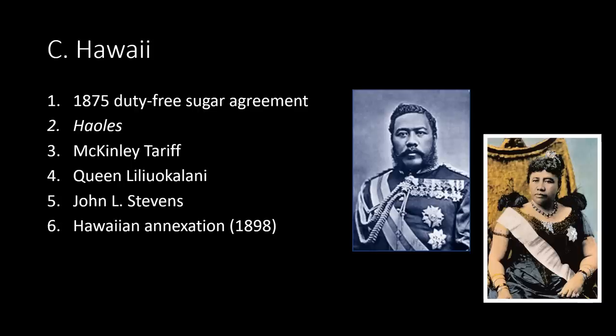Hawaii. The Hawaiian Islands were united in 1795. In 1875, Hawaiian royalty entered an agreement with the United States to import sugar duty-free — meaning they paid no taxes. This created a boom in sugar production, and soon American planters known as Haoles had flooded the island nation. In 1887, King Kalakaua granted voting rights only to the wealthy. Treaties integrated Hawaii into the American economy and gave the United States control over Pearl Harbor. Then the McKinley Tariff of 1890 eliminated the duty-free status on sugar.